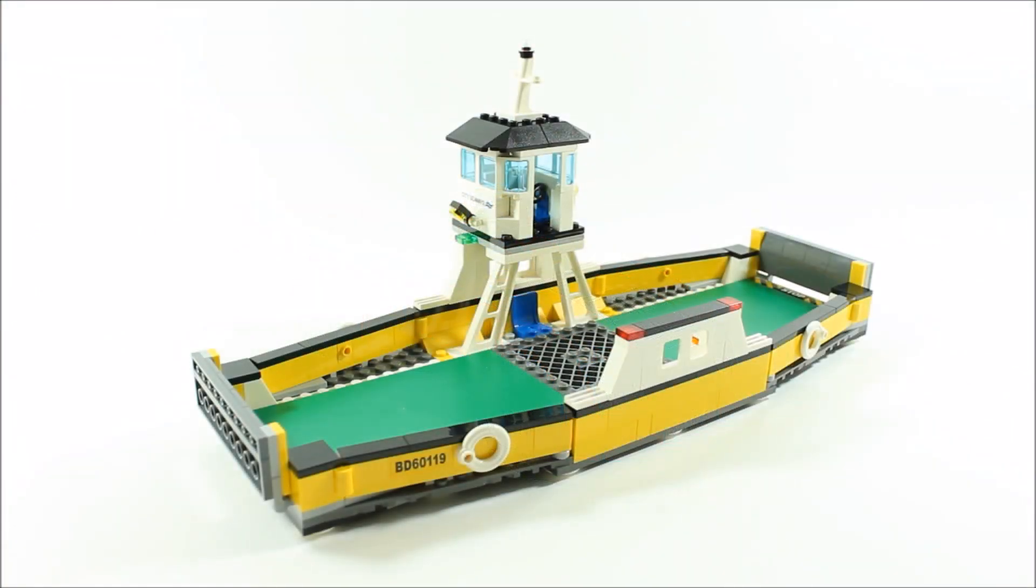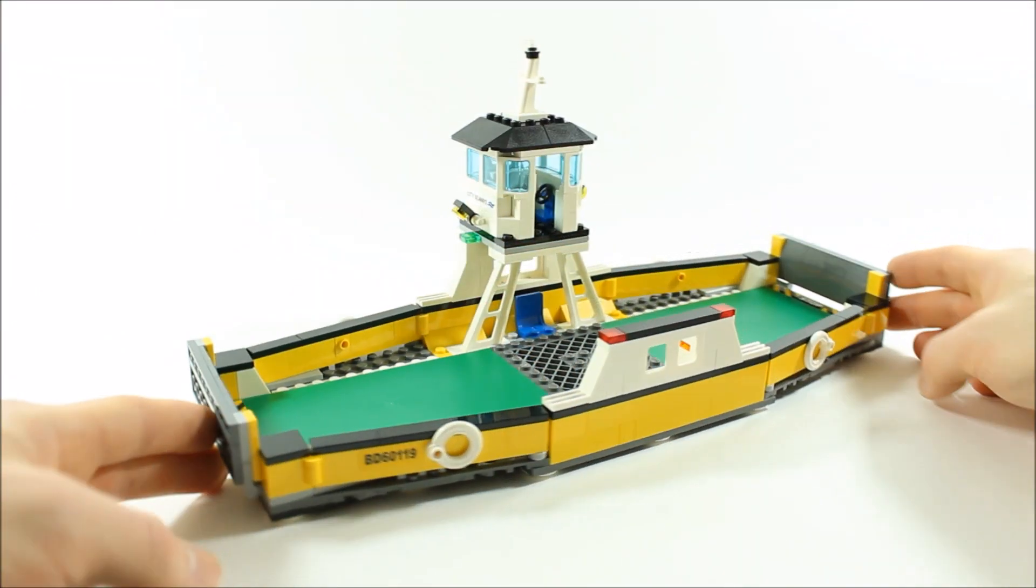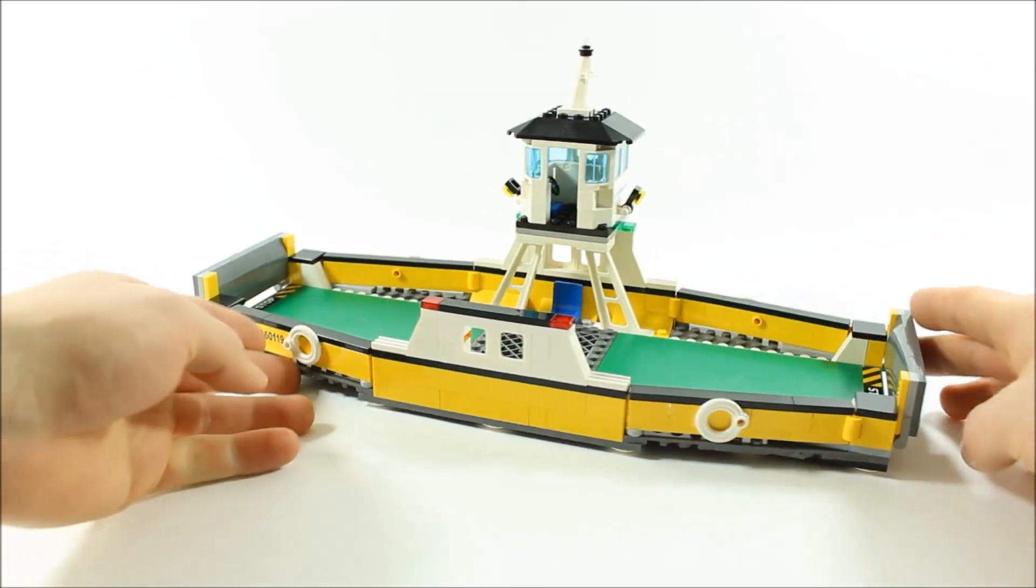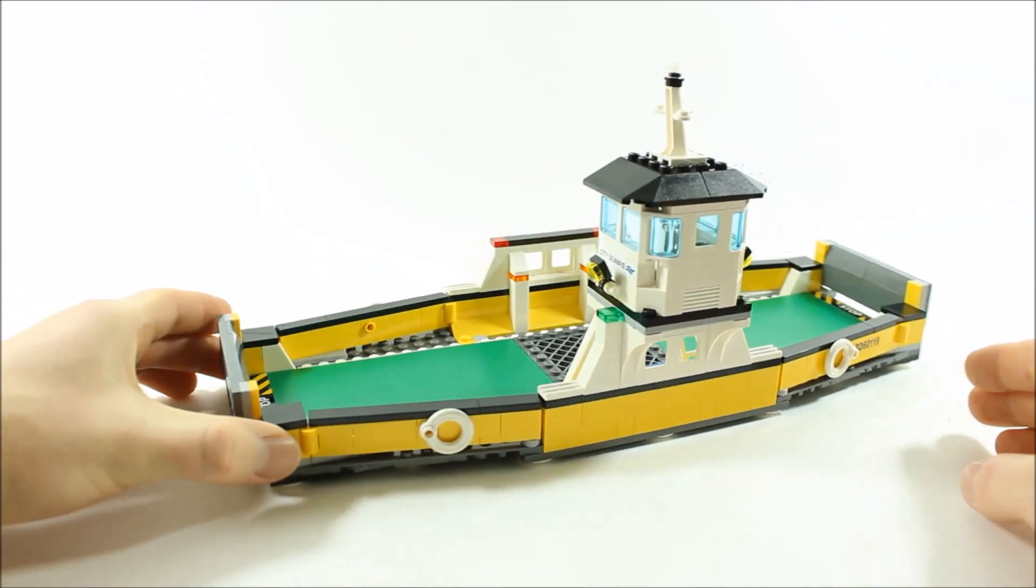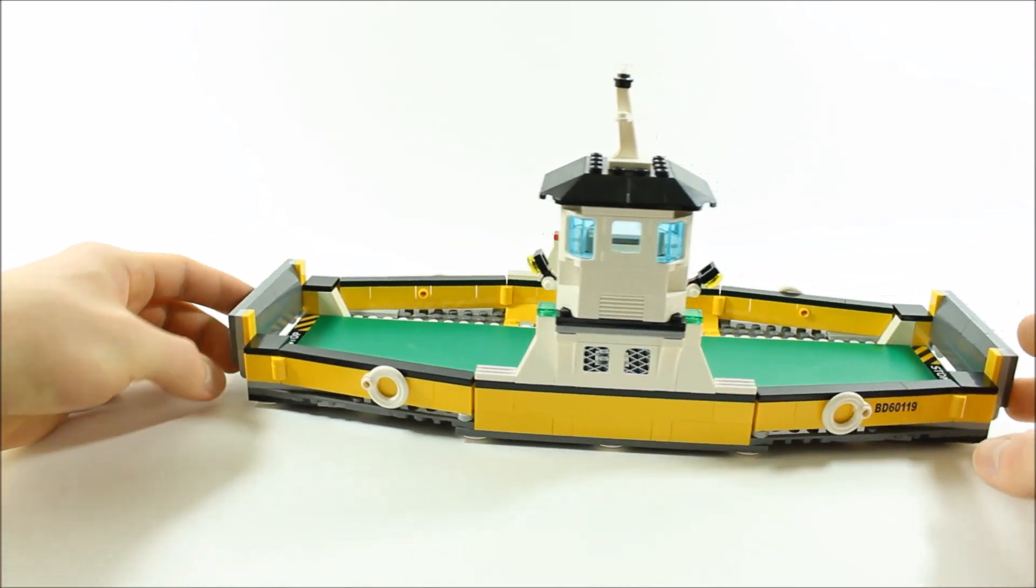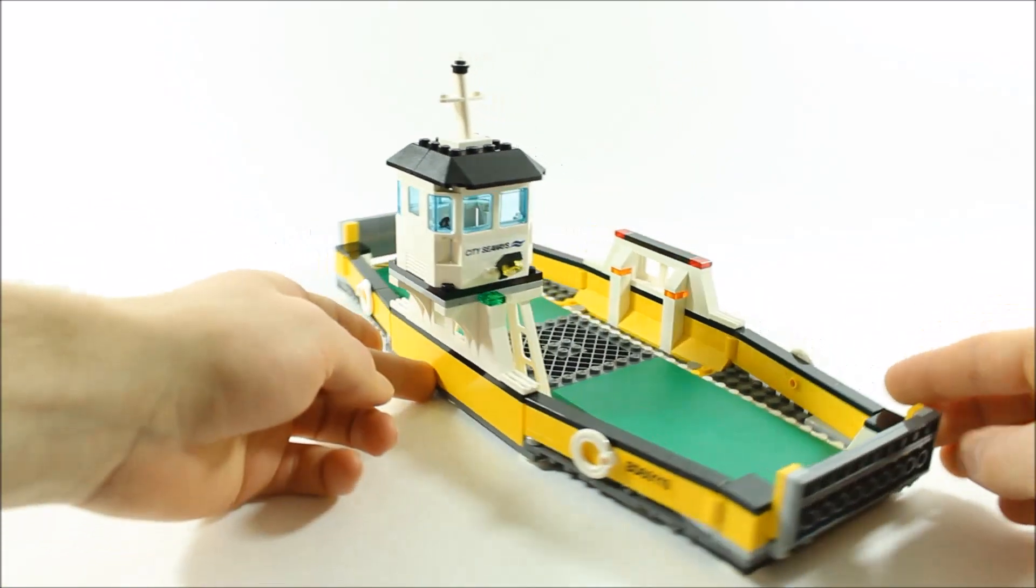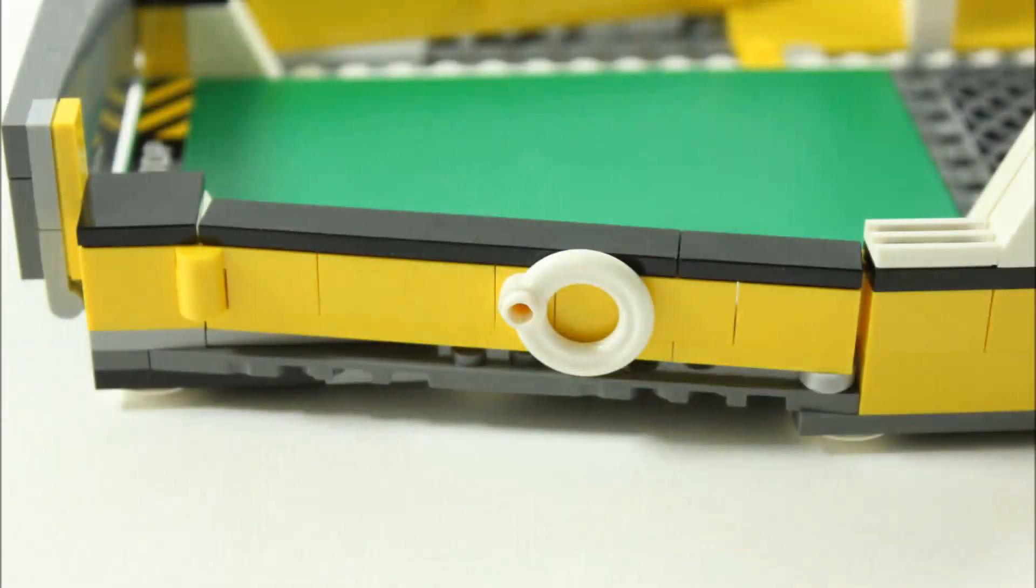Now the ferry has yellow walls around the side with black tiles on top, giving it a good color scheme. There are gates at either end for vehicles to exit and enter. The cabin sits high up where the captain can pilot the vessel. Clipped around the sides are four white life rings and some stickers.